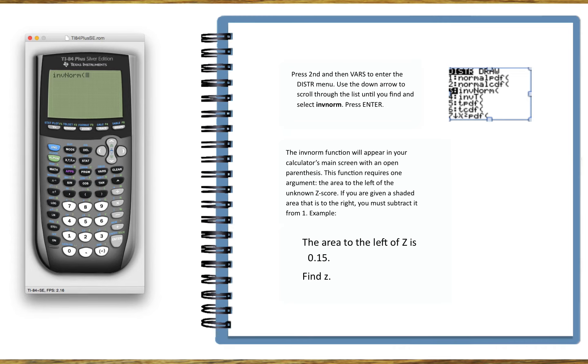all you have to enter now is 0.15, close the parenthesis, then press ENTER and you will see the z-score is negative 1.04. Usually z-scores are rounded to two decimal places.